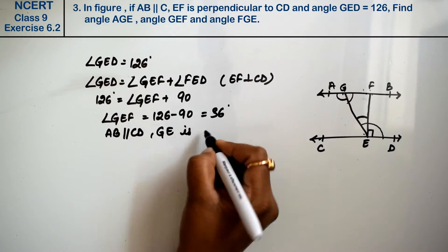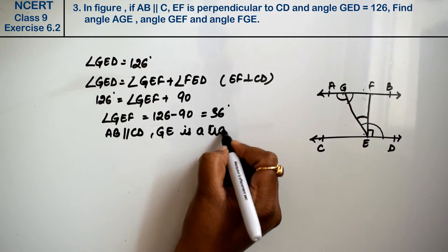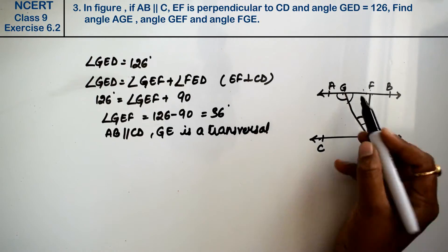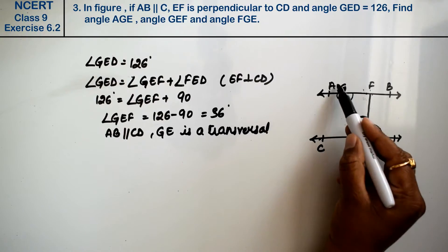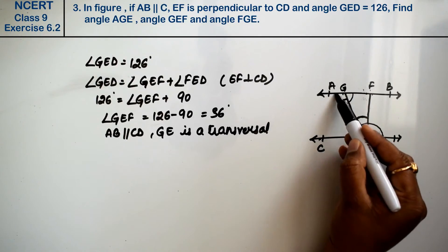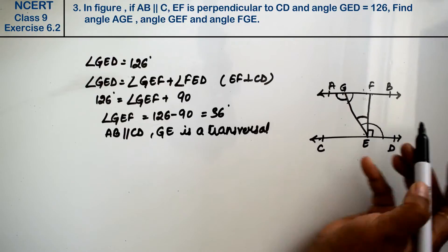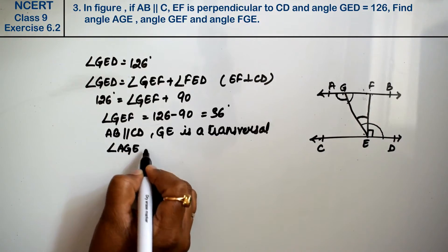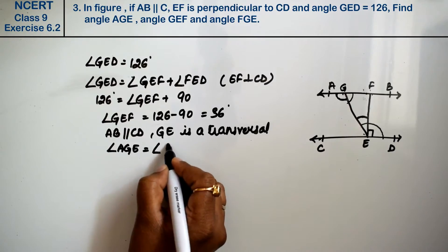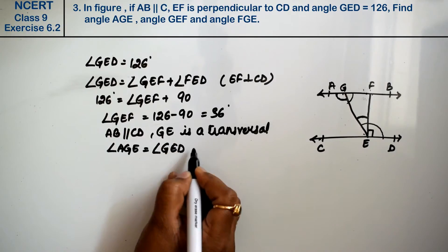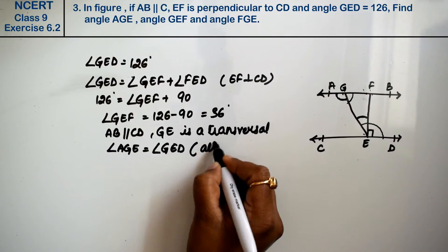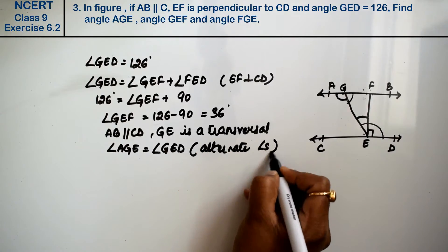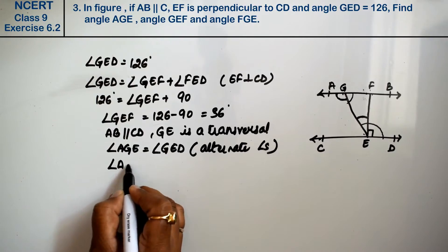GE is a transversal which cuts the parallel lines AB and CD. Since AB is parallel to CD and GE is the transversal, angle AGE is equal to angle GED because these are alternate angles. So angle AGE equals 126 degrees.